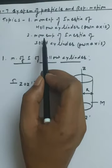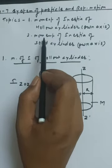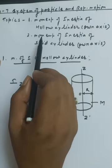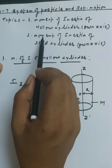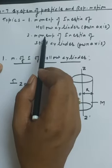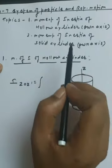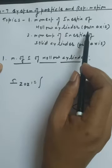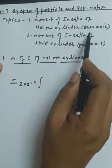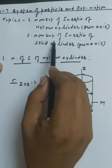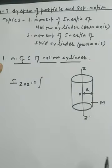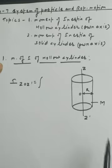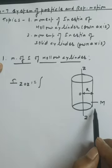In Chapter 7 on system of particles and rotational motion, today we have another topic regarding the moment of inertia — specifically for a hollow cylinder. We are asking the moment of inertia of the hollow cylinder about its own axis. The second option we have is the moment of inertia of a solid cylinder about its own axis. We will start with the hollow cylinder first.